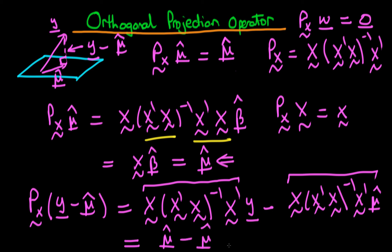We already know from earlier in this video that the second term is also μ̂, so we just get μ̂ minus μ̂, which equals zero. In other words, the projection operator operating on a vector orthogonal to the column space of X — represented by the plane here — gives zero. So the orthogonal projection operator has the properties we require of it.